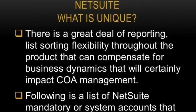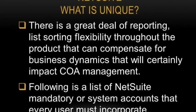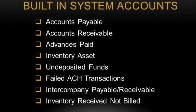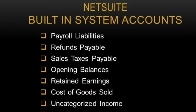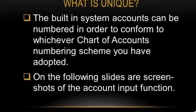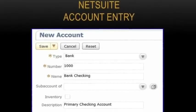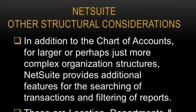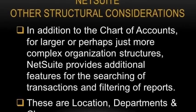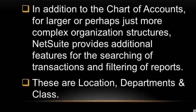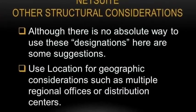NetSuite presents a great deal of reporting and list sort flexibility throughout the product that can compensate for business dynamics. In addition, there are mandatory accounts designed to ensure system integrity. These built-in system accounts can be numbered to conform to whichever Chart of Accounts numbering system you have adopted. For larger or more complex organization structures, NetSuite provides additional features for searching transactions and filtering reports — these are location, departments, and class. We present some ideas here on how to successfully use these designations.